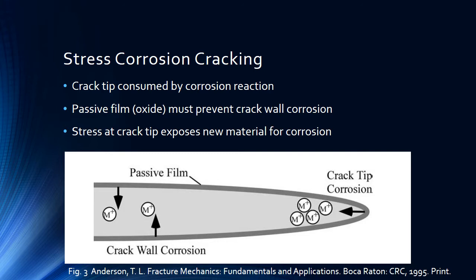As I said before, stress corrosion cracking involves an anodic corrosion process which allows the tip to be consumed by the corrosion reaction. It's crucial that the crack tip be consumed more rapidly than the wall of the crack. This allows new material to be exposed at the crack tip and the crack to propagate.